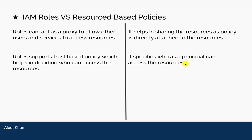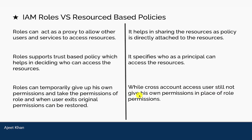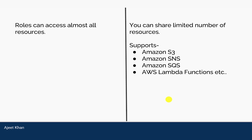Resource-based policies specify who, as a principal, can access the resource — whoever is specified in the principal can be allowed or denied. Roles can temporarily give up a user's own permissions and take on the role's permissions; when the user exits, original permissions are restored. In resource-based policy cross-account access, users do not need to give up their own permissions. Roles can be created for almost all AWS resources, whereas resource-based policies are available for a limited set — for example, bucket policies for S3, and policies for SNS and SQS — but not for EC2, Route 53, or other services, for which you need IAM policies and roles.